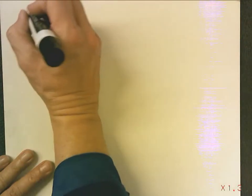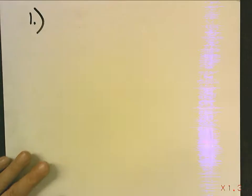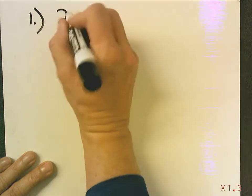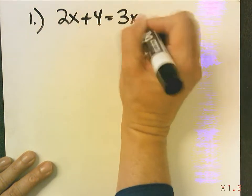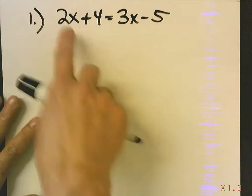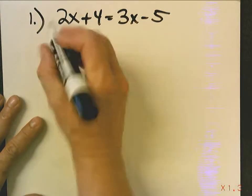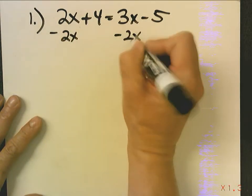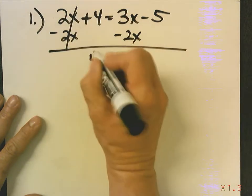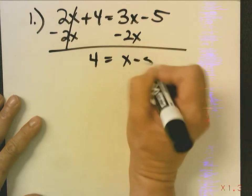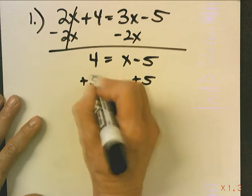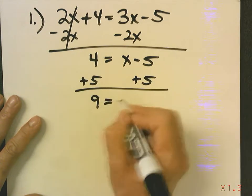Okay, if you turn to page 3, we're going to do a quick review on solving an equation with a variable on both sides. So 2x plus 4 equals 3x minus 5. I notice I have a variable on both sides. I don't want that, so I'm going to take it away from one of the sides. I get 4 equals x minus 5. Now I add 5 to both sides. 9 equals x.